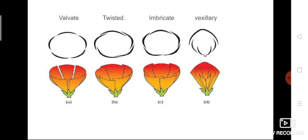In valvate estivation the sepals or petals just touch each other only at the margins. If you see picture A, the margins of the petals are only close to each other — that is, only the margins of the petals touch with each other. This type of arrangement is called valvate estivation.